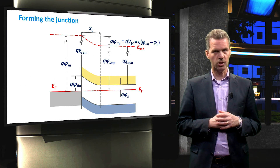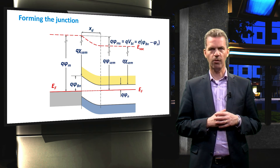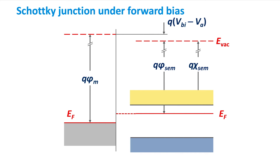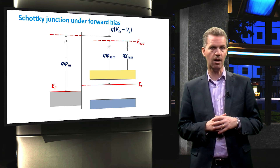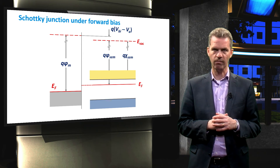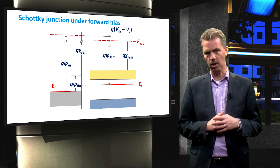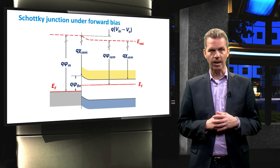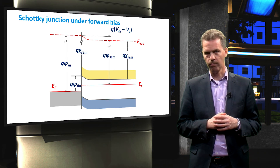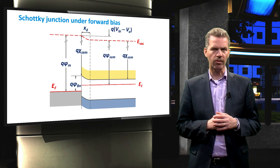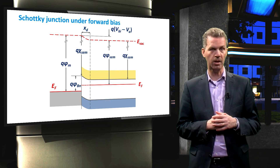So far we constructed the band diagram of this junction in thermal equilibrium. Now let's apply a bias voltage. We first consider forward bias, which means a negative voltage on the n-type semiconductor with respect to the metal. As a result, the quasi-neutral part of the n-type semiconductor will be at a higher potential energy, and the barrier for electrons to travel from the semiconductor to the metal is reduced from V_bi to V_bi minus V_A, where V_A is the applied voltage. The Schottky barrier at the junction is determined by the metal work function and semiconductor electron affinity only and does not change. We can then draw the depletion region, which has reduced in width, similar to what we have seen for a p-n junction under forward bias.